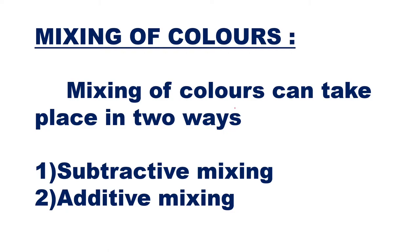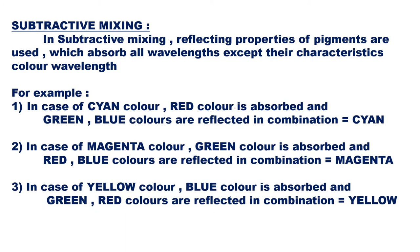We will now see what color mixing is, as it produces many other colors. There are two types: subtractive mixing and additive mixing. For color TV transmission, we use additive mixing, whereas for painting and other applications, subtractive mixing is used. In subtractive mixing, the reflecting properties of pigments are used, which absorb all wavelengths except their characteristic color wavelengths — meaning colors are subtracted from white to get a particular color.